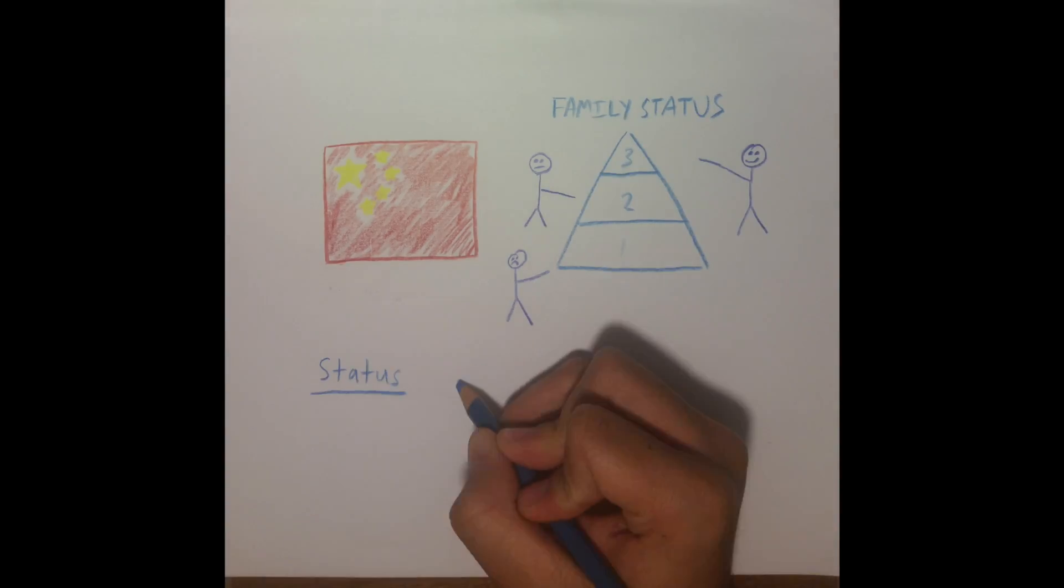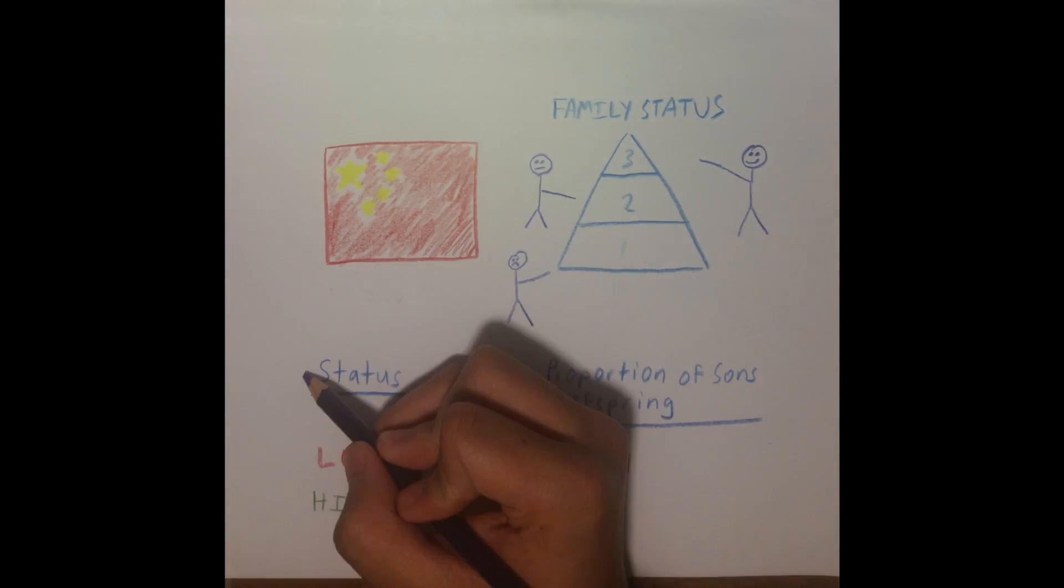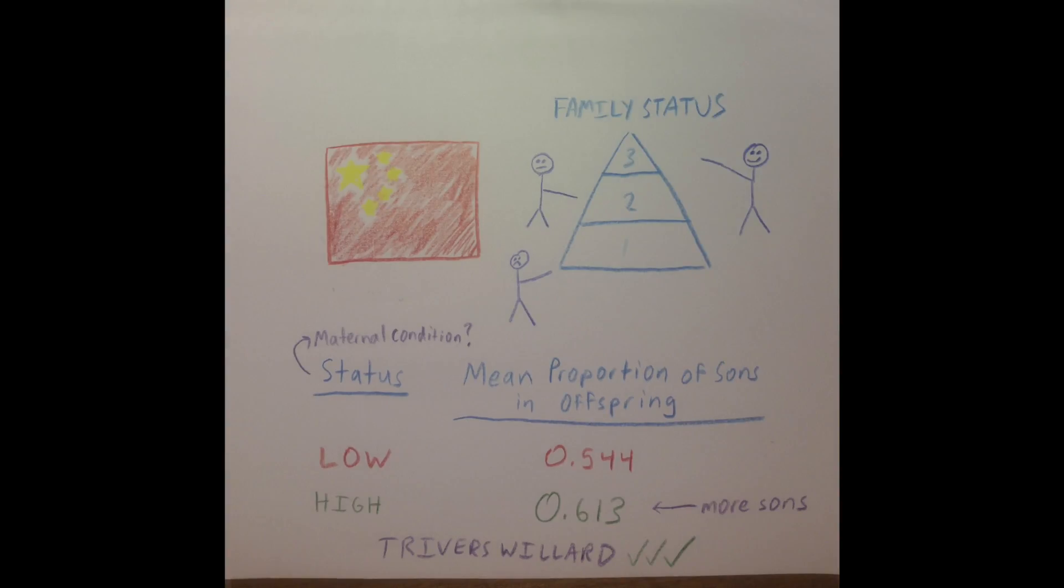As the Trivers-Willard hypothesis would predict, the study found that the mean proportion of sons in offspring in current low-status families was 0.544, while this proportion was 0.613 for current high-status families. The positive correlation between these variables was statistically significant. Families of higher status, in better condition, tend to produce more males.